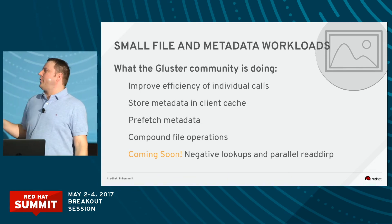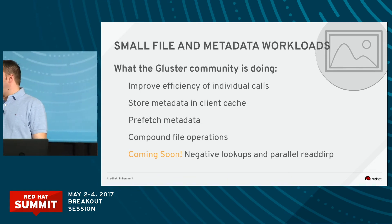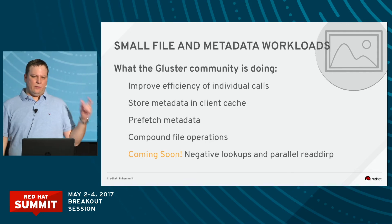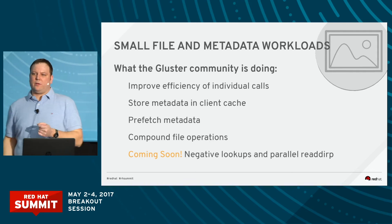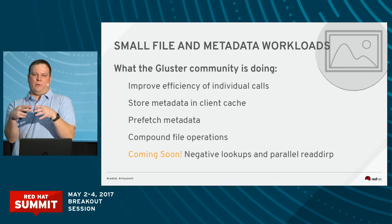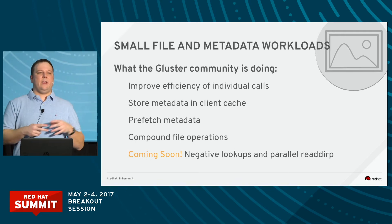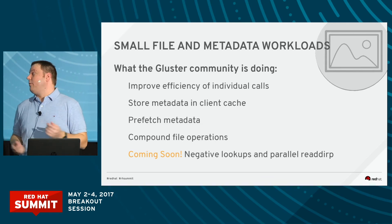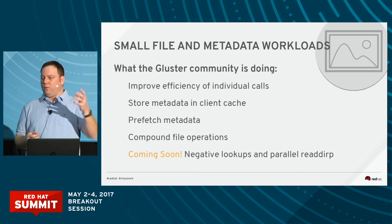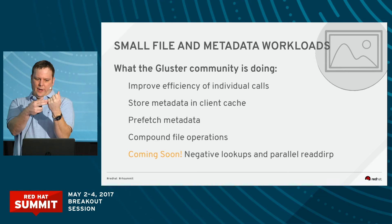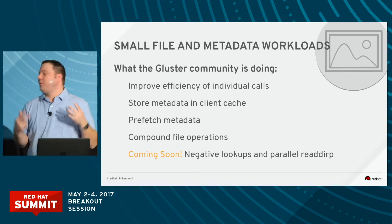Something that's going to come out with Gluster 3.3 is negative lookups — that's a way for us to do caching of lookups. A good example is Samba. Samba is used to running on top of a local file system, and it issues lots of different calls over and over again — Samba is very lookup heavy. So with negative lookups, we'll do the lookup the first time, we'll cache it, and then subsequent lookups will be serviced from that cache.